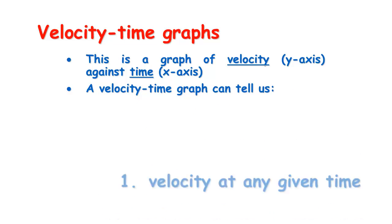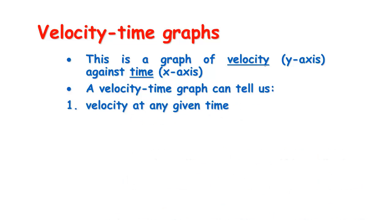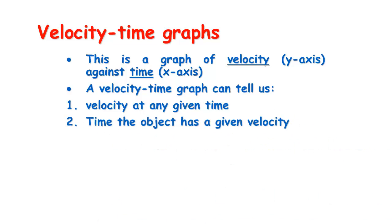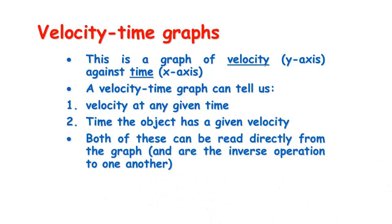From a velocity-time graph we can read the velocity at any given time, and we can find what time the object travelled at any given velocity. Both of these are read directly from the graph — either start from the time, work up and read the velocity off, or start at a velocity, go across and see at what time or multiple times it cuts across, then read the times off.